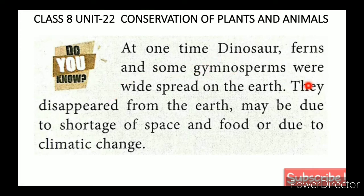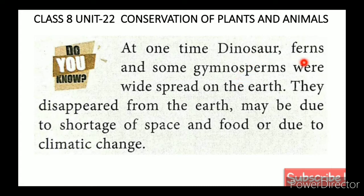Do you know? At one time, dinosaurs, ferns, and some gymnosperms were widespread on the earth. There are two types of plants: gymnosperms and angiosperms. They disappeared from the earth, possibly due to shortage of space, food, or due to climate changes. This is the plant kingdom.